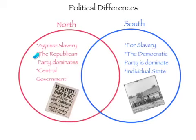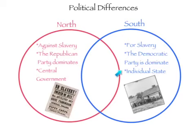The Republican Party begins to dominate Northern politics in the 1850s. Unlike the North, the Democratic Party is dominant in the South. The North believes they should keep tradition and have a central government, but the South wants individual state rights.